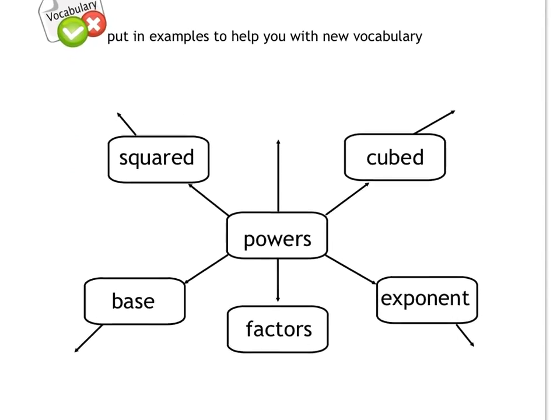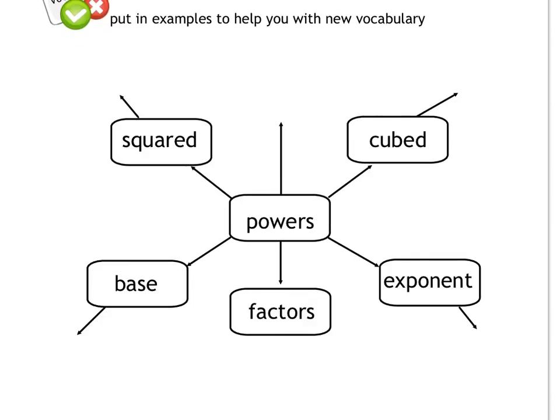Pause here and write down this web, then fill in examples with me as we go. Powers are numbers that are written with exponents — for example, two squared or three to the fourth. It's called a power when a number is used to show repeated multiplication. The components of powers are made up of factors of the same number condensed as a base and an exponent.